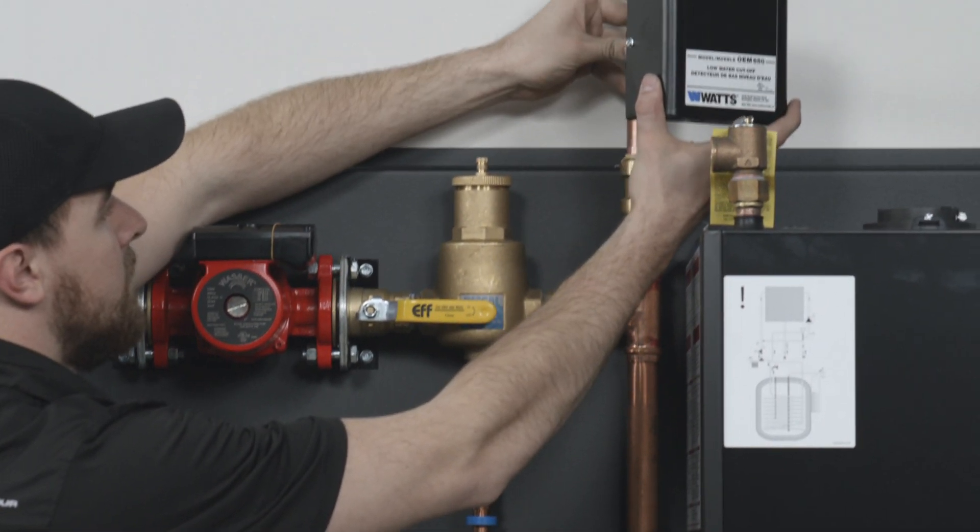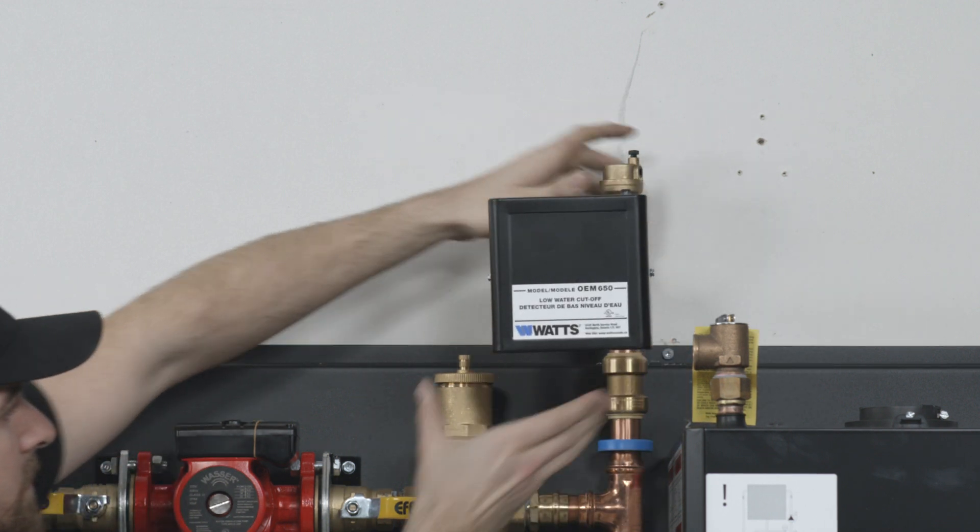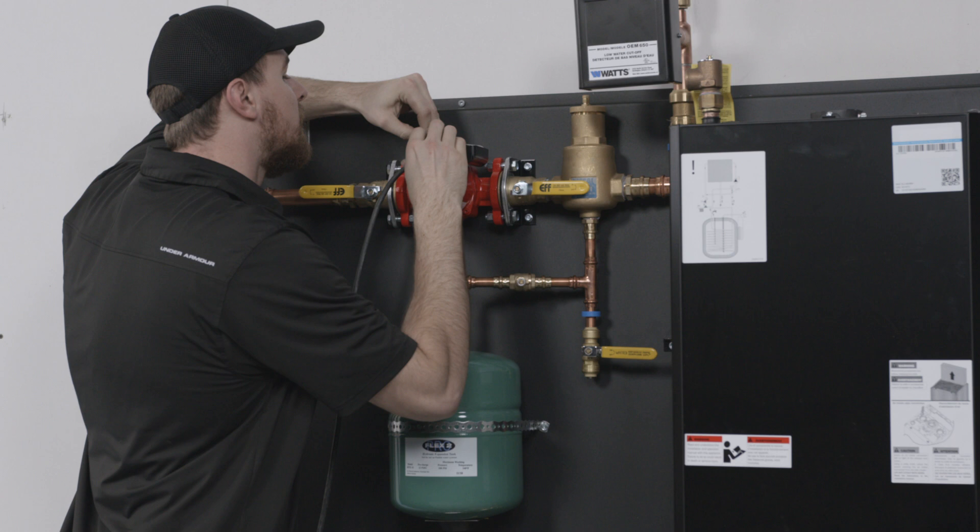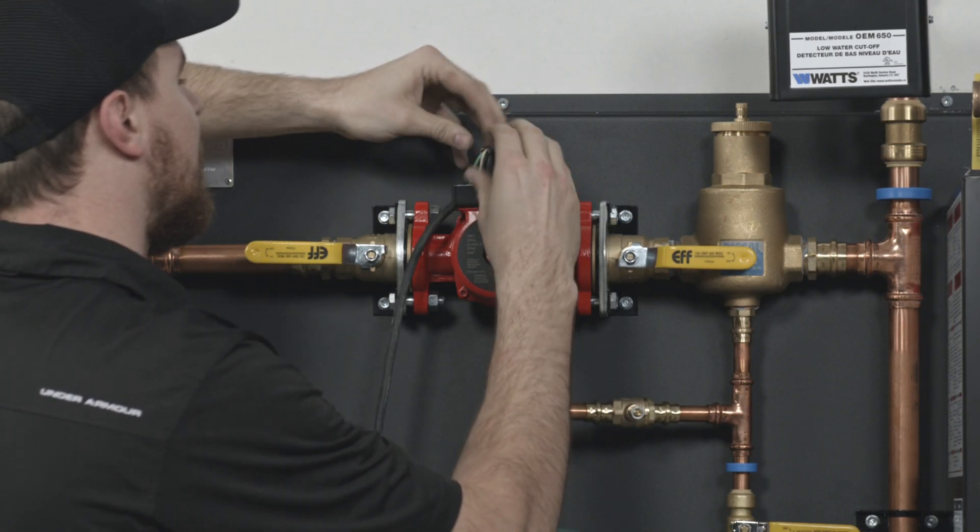Install the low water cutoff device into the push-fit or union connection near the top of the boiler. If equipped with an external pump, have your electrician temporarily wire it to be plugged into an outlet.